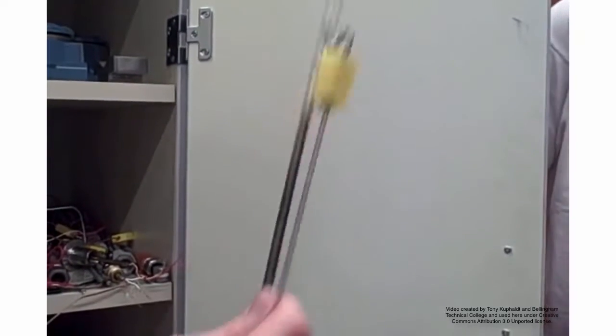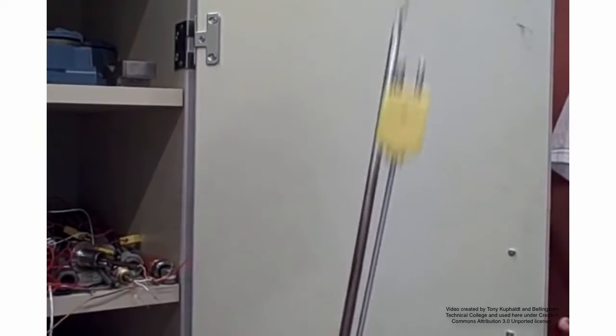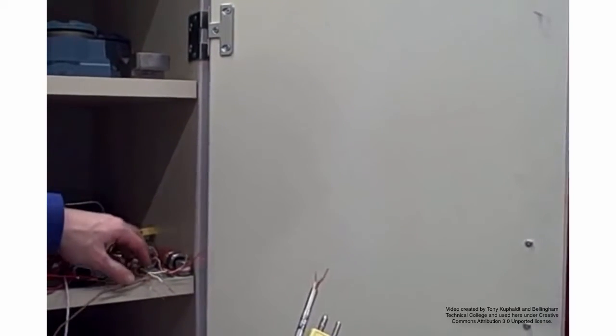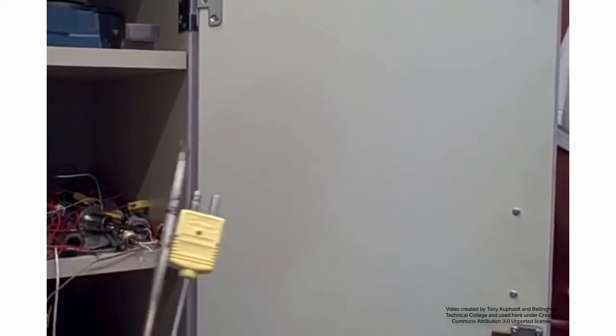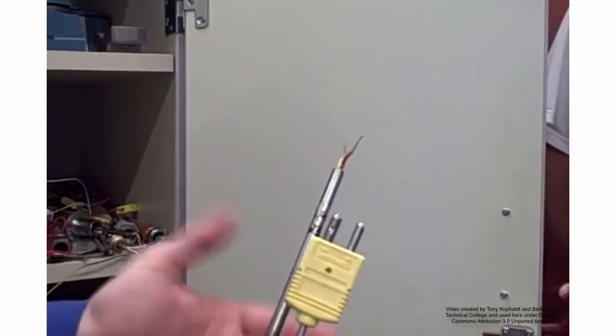But these are pre-manufactured industrial thermocouples here, both type K, and then the one I was holding before, that little piece of wire there, is just a type J wire. You can form your own thermocouple by twisting the wires together.